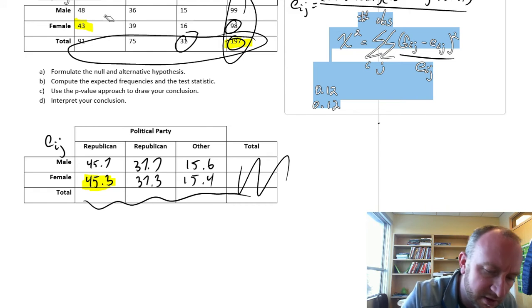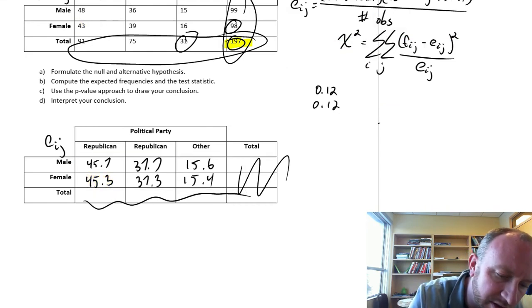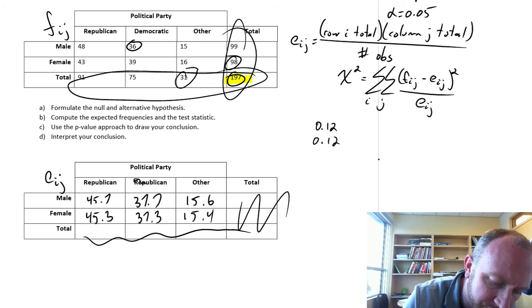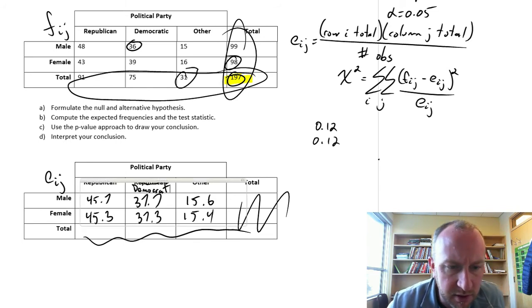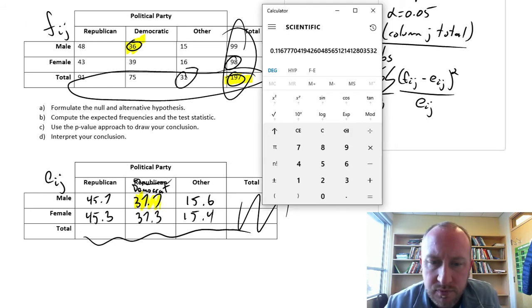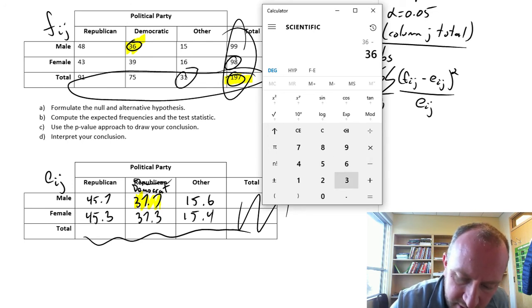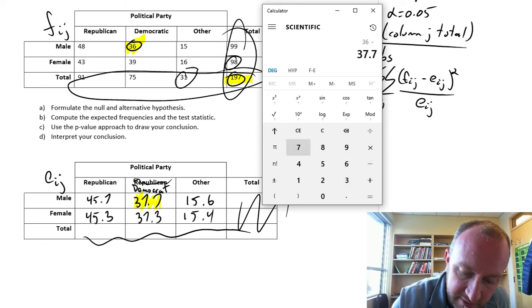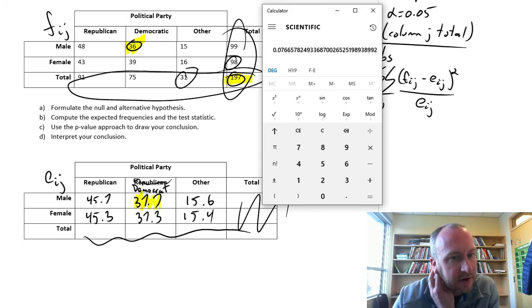Now we'll look at the male Democrats. Oh, why do I have Republican written twice there? This is a typo. This should be Democrats. So this observed and this expected value: 36 minus 37.7 squared, divided by 37.7. Let's call that 0.08.